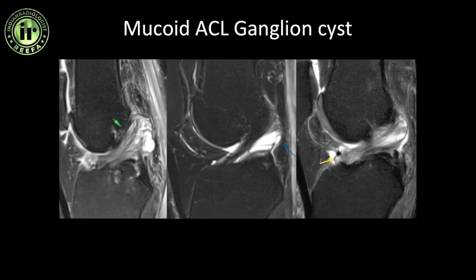In mucoid ACL you tend to develop gangliosis at multiple levels. In this patient there is a multiloculated ganglion cyst at the femoral attachment. This patient has an intrasubstance ganglion cyst formation, and one bundle is intact — so this is a mucoid ACL involving a single bundle with an intrasubstance ganglion cyst. In this patient there is a small ganglion cyst forming at both the femoral and tibial attachments. You need to mention at what level you are seeing the ganglion cyst.